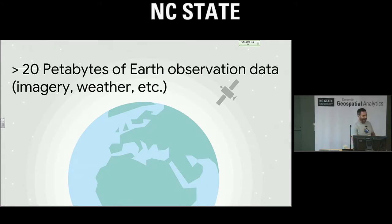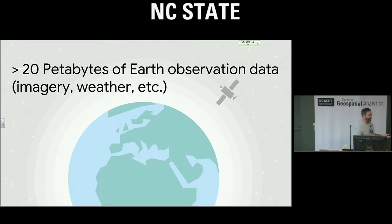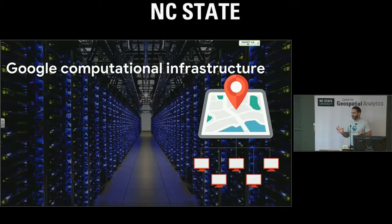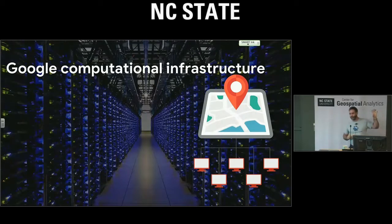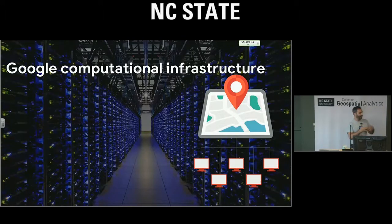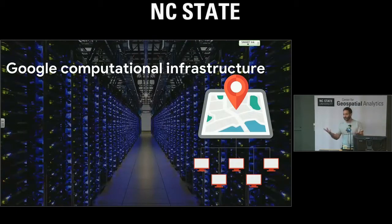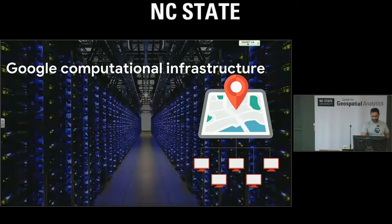This is actually an old slide — I had to update it from 7 petabytes to 20 petabytes, and this is growing every day. This is the core of Earth Engine: a gigantic data catalog hosted on Google servers. The idea is that we download all this stuff so that you don't have to. Co-located with this large archive is a large cluster of compute power — the same cluster that powers search, YouTube, and Gmail — and we let Earth Engine users make use of this cluster. It's like having your own personal supercomputer to analyze all those data.